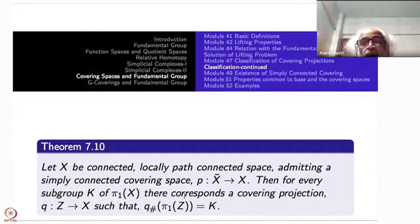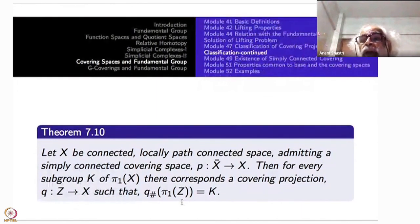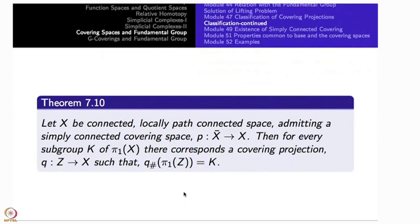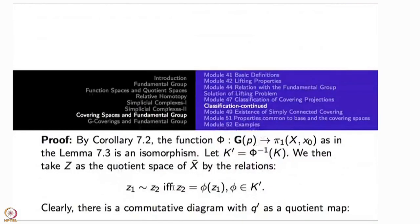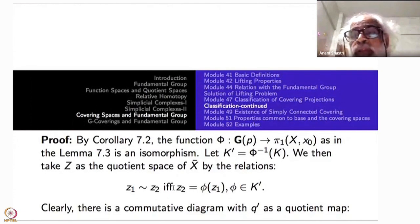This will completely solve the problem: for each subgroup you will have a corresponding covering. We know how they are related — conjugates up to conjugation will be all isomorphic up to equivalence. Now, for arbitrary subgroups, we have a bijection from the group of covering transformations to π₁(x, x₀). Since p is a universal — simply connected — covering, this itself is an isomorphism.